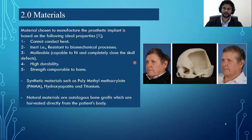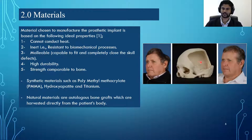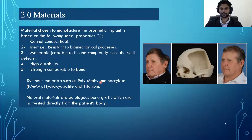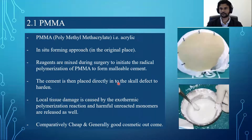Now there are two types of materials: synthetic and natural. Natural materials are the actual bones harvested from the patient's own body, which are then grafted into the skull. Synthetic materials are man-made, and the most common examples are polymethyl methacrylate — PMMA for short — hydroxyapatite, and titanium. Since each material has its own advantages and disadvantages, let's go through them, beginning with PMMA.